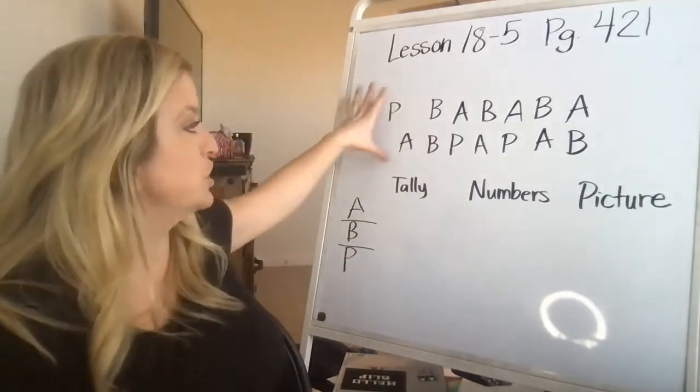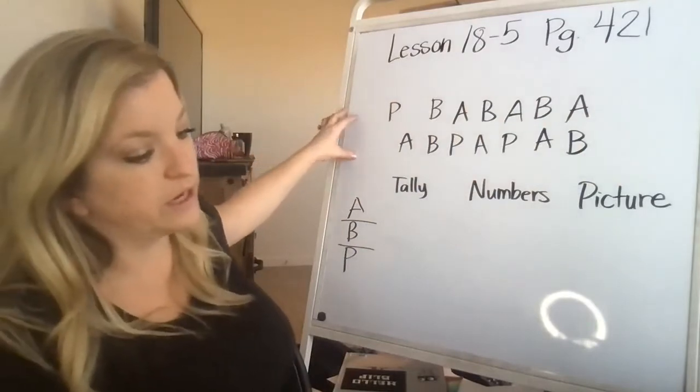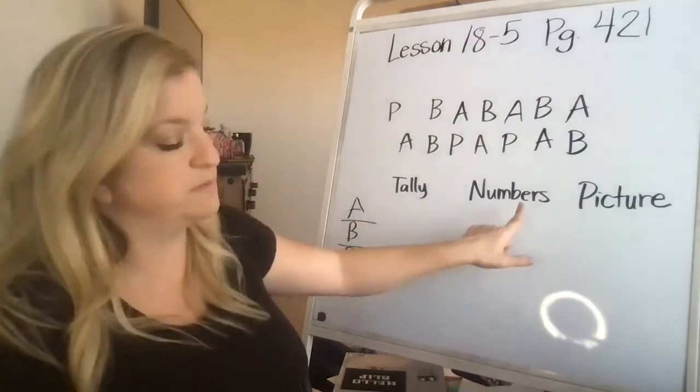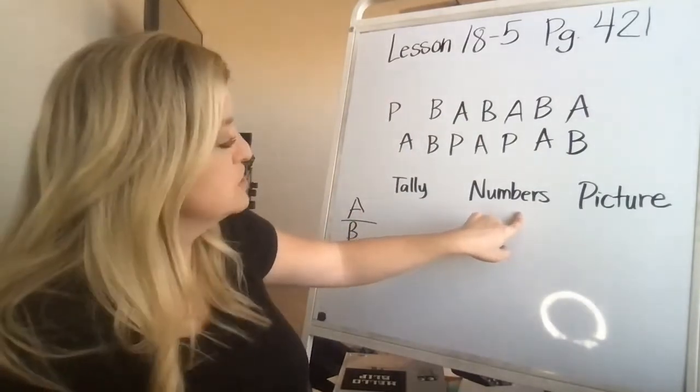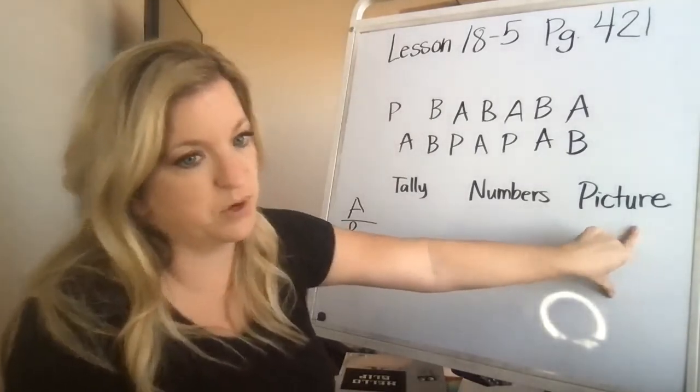And what you're going to do is you're going to look at all of those pieces of fruit and you're going to make a tally chart—that's problem number one. You're going to make a numbers chart—that's number two. And you're going to make a picture graph—that's number three.